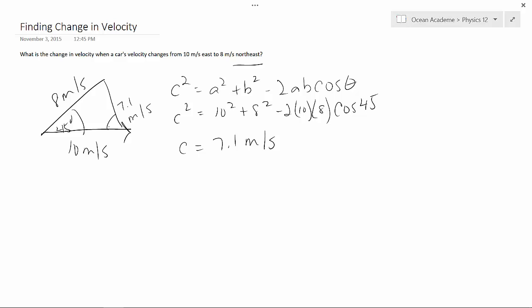Now, that's the magnitude of the velocity. We need to determine what the direction is, so I'm going to use sine law. Sine theta, that's our unknown, what we're trying to find, over 8, equals sine 45 degrees over 7.1. Again, multiplying this out and taking the inverse, we determine that our angle is 52 degrees, and it would be north of east.